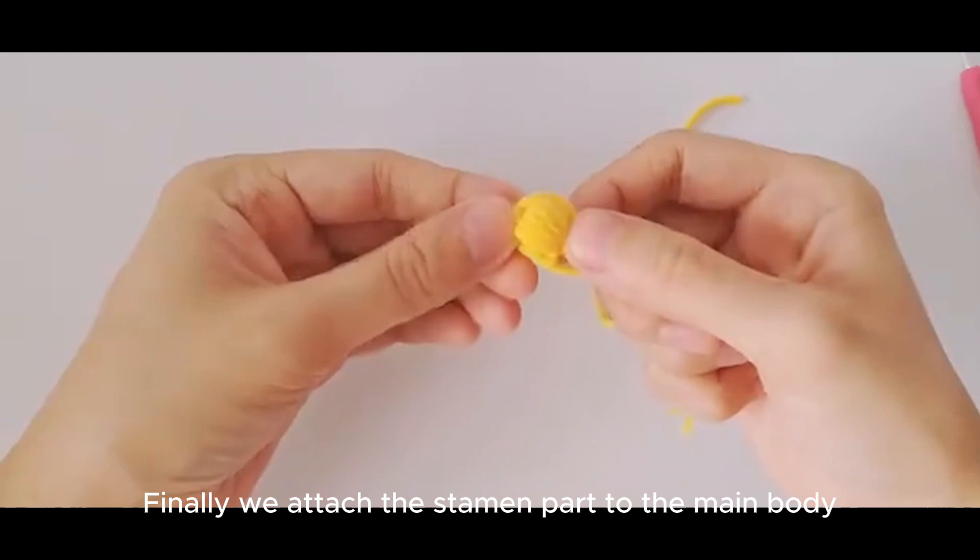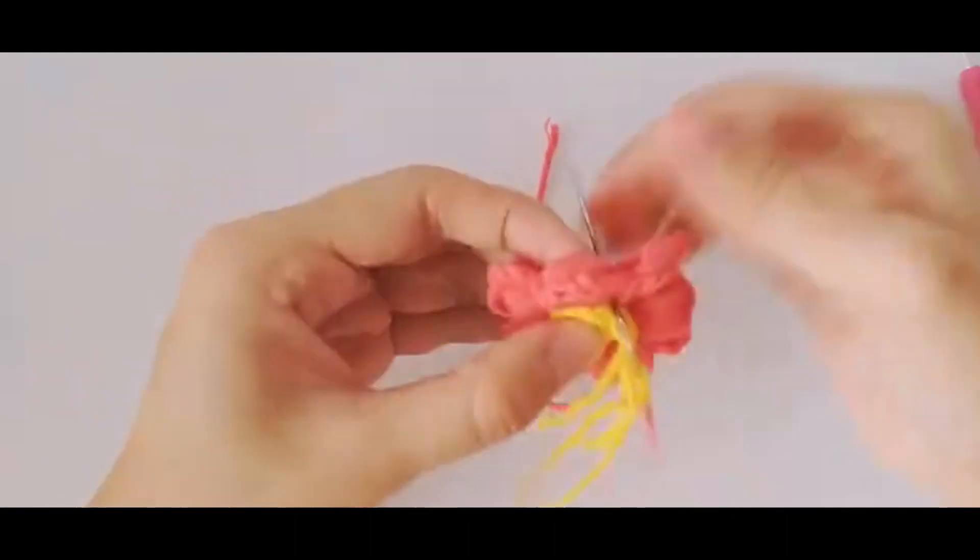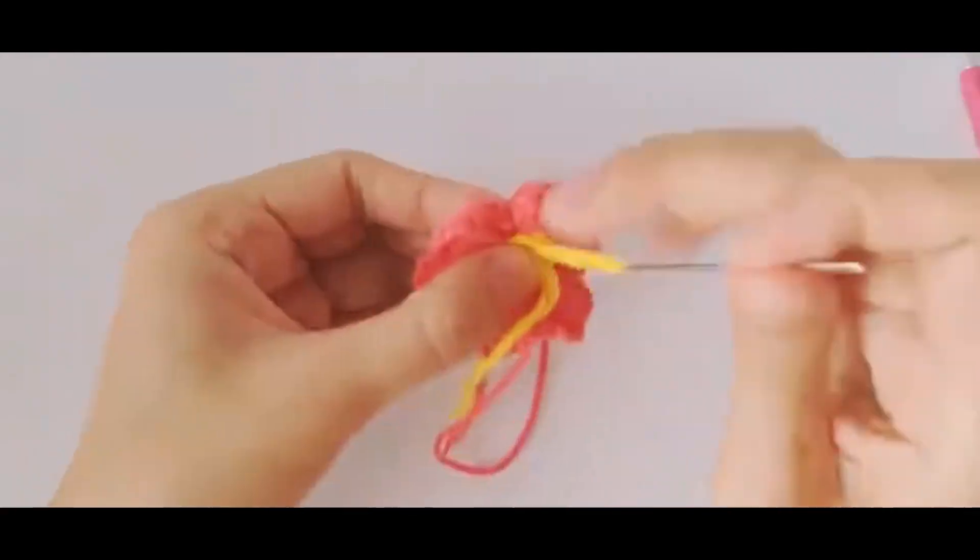Finally we attach the stamen part to the main body. One black hole to the boot chain. Then tighten part.